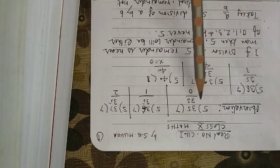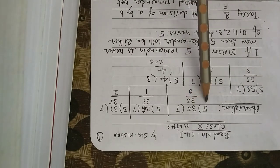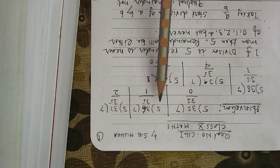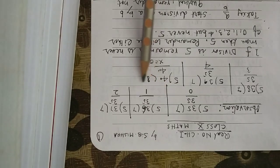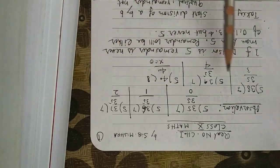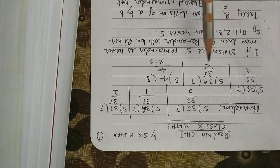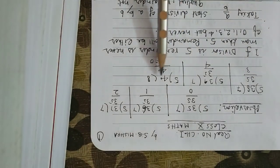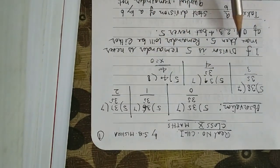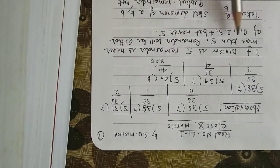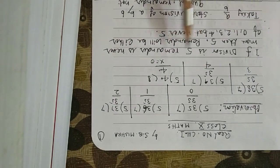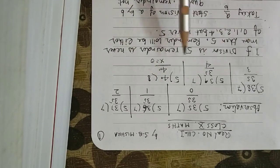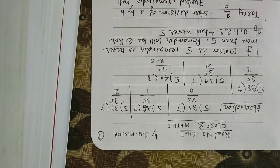Observation: when 35 is divided by 5, remainder is 0. When 36 is divided by 5, remainder is 1. 37 remainder 2, 38 remainder 3, 39 remainder 4, and 40 remainder 0. If the divisor is 5, the remainder is never more than 5. Remainder is either 0, 1, 2, 3, or 4. So remember it.